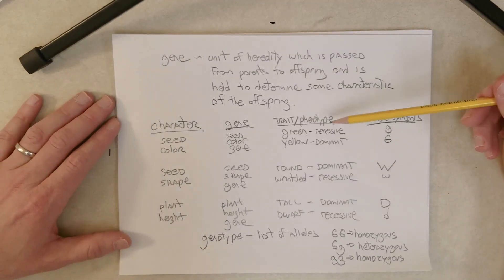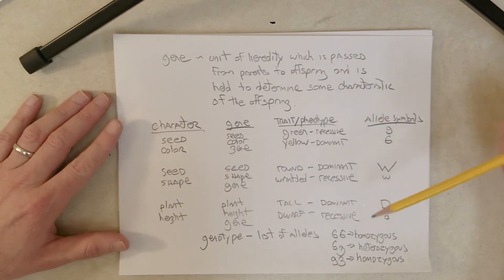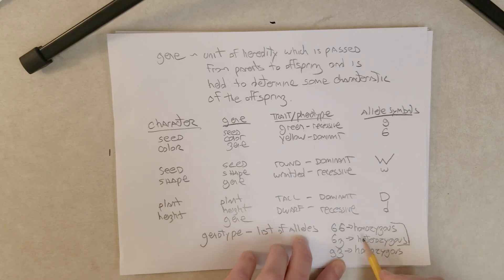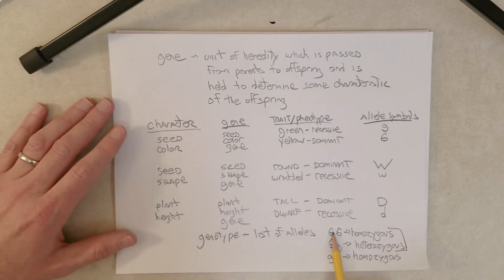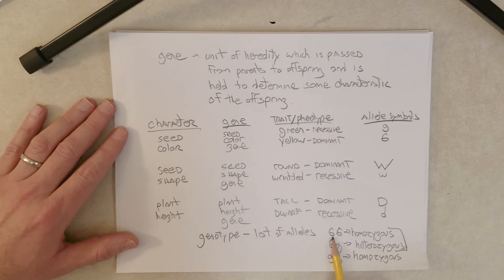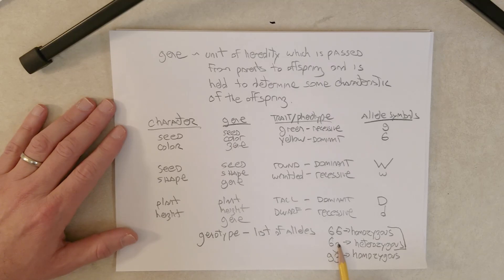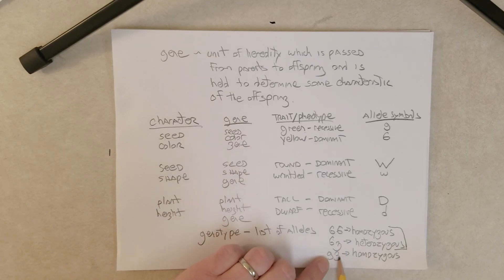Now the phenotype up here is the physical manifestation of the genotype. So I'm running out of room here, but I just want to address that these guys right here are going to have the yellow phenotype, right? Because if you have one dominant allele, then you have the dominant phenotype. It's almost like that recessive allele isn't even there. And this genotype right here will have the recessive green phenotype.